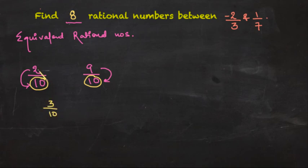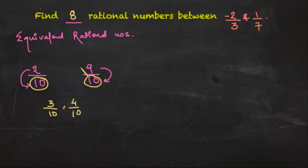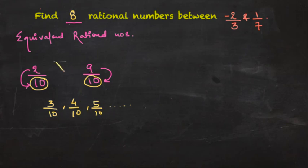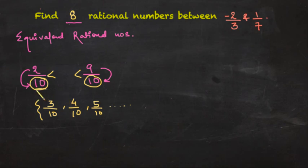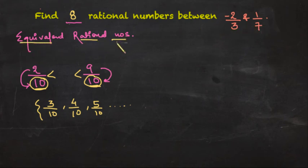Three upon ten means three parts out of ten parts — more than two parts but less than nine parts. Similarly, four upon ten, five upon ten, six upon ten, seven upon ten, and eight upon ten all lie between these two rational numbers — all greater than two by ten and less than nine by ten. It makes things really simple when the denominators are the same, and that's what we will be using to find eight rational numbers between our two given rational numbers.